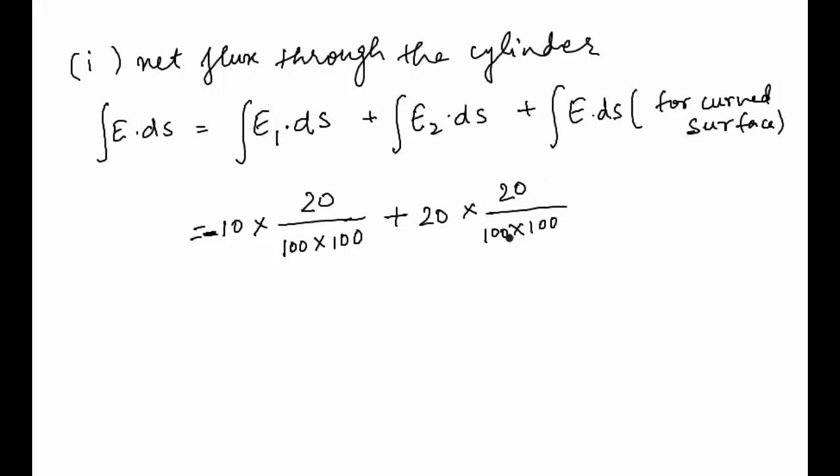For the curved surface, since the area vector is perpendicular to the electric field vector, the dot product will be 0. This comes out to be (-10 × 20 + 20 × 20)/(100×100) = 0.02 N·m²/C. This is the answer for the first part.